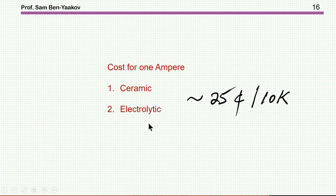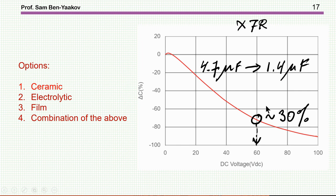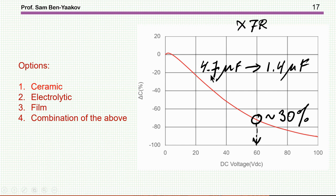Considering an all-ceramic solution: we must be aware that the capacitance of a ceramic capacitor — X7R is a good choice — drops dramatically with applied DC voltage. If I choose a 100-volt capacitor and operate at 60 volts, I have only about 30% of the nominal capacitance. That is 1.4 microfarad rather than the nominal 4.7 — a big difference that must be taken into account.